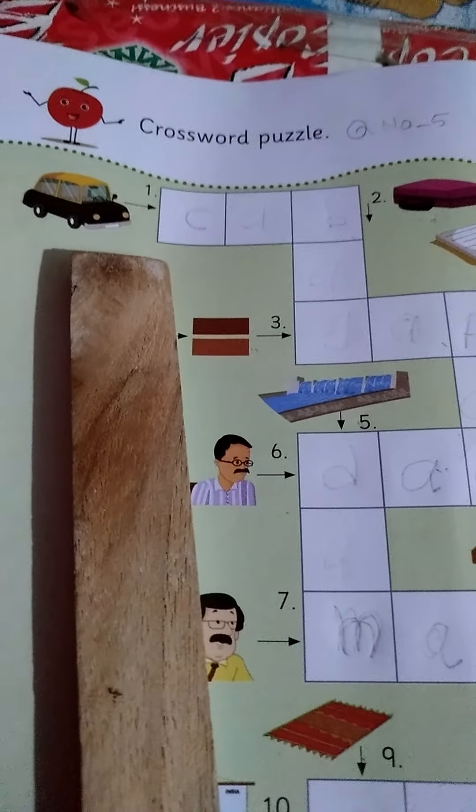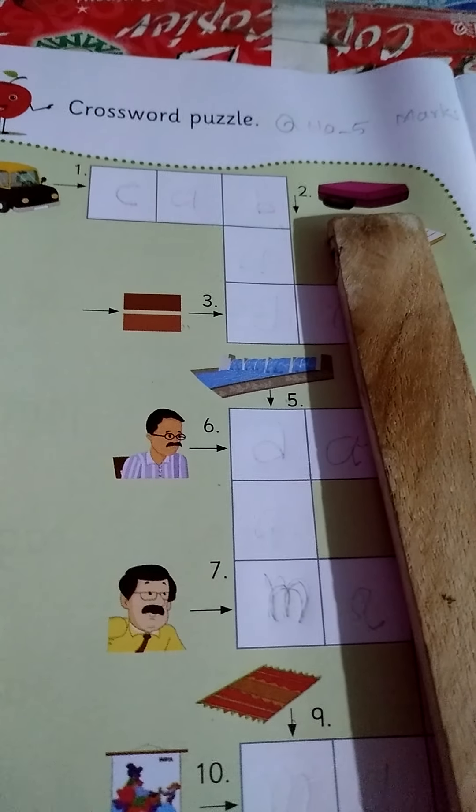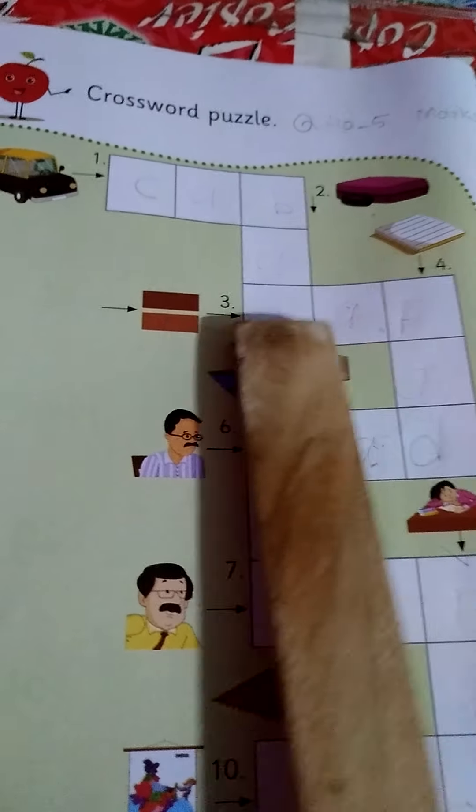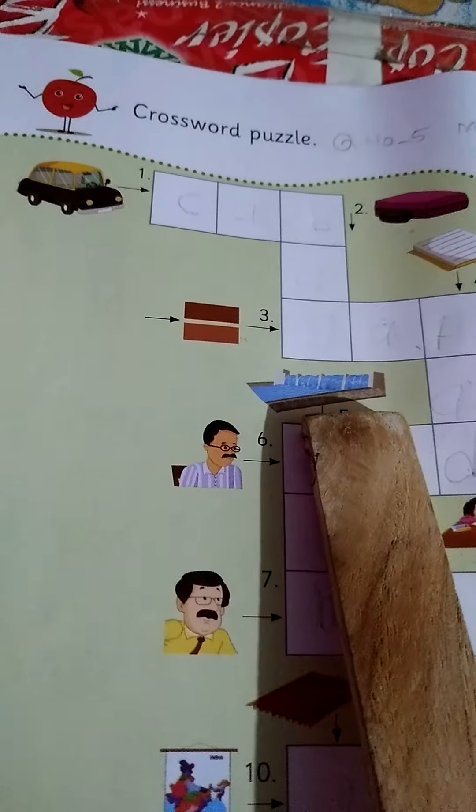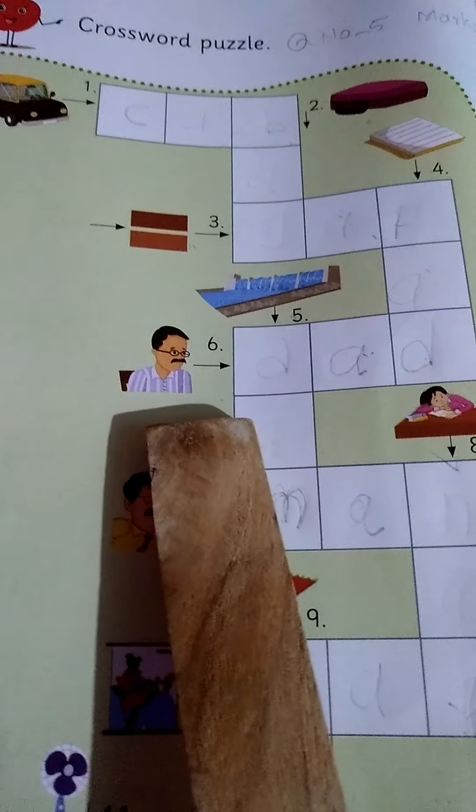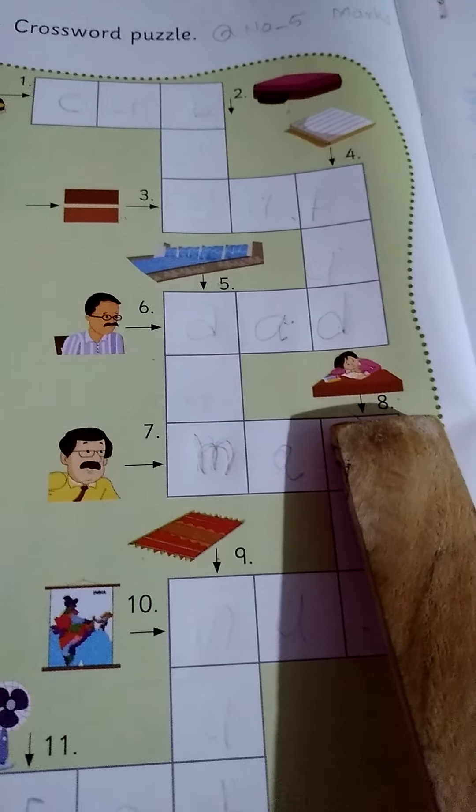Look at picture. Which picture is this? This is cap. This is bag. This is pad. This is gap. This is dam. This is dad. This is nap.